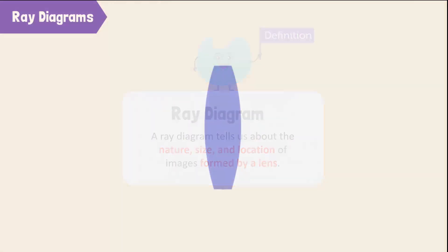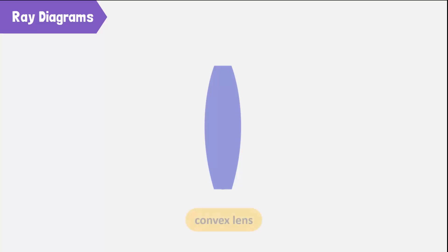But before we start, let's look at some terms that we need to know about ray diagrams and lenses. Let's use a convex lens to illustrate. The center of the lens is known as the optical center, denoted by O.